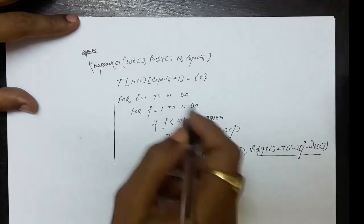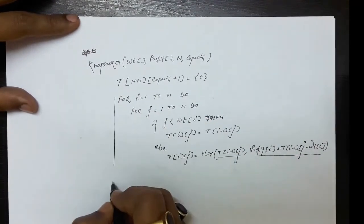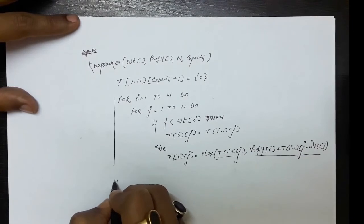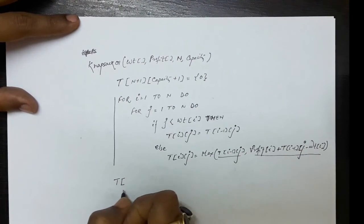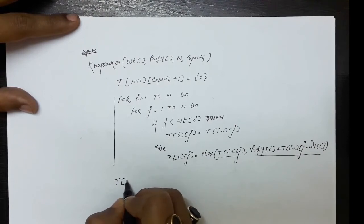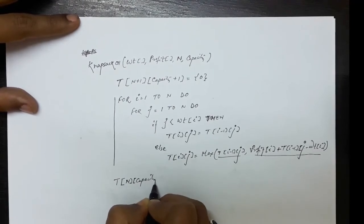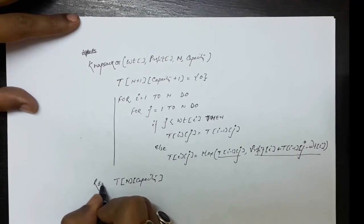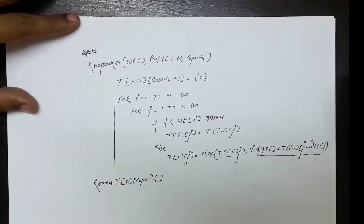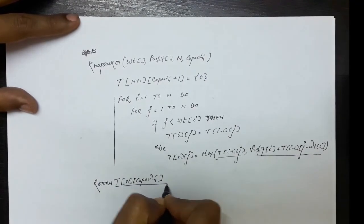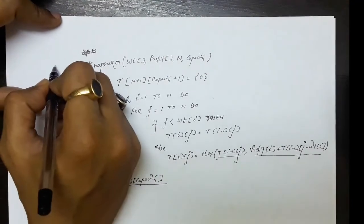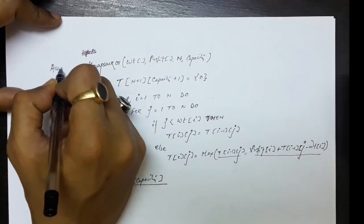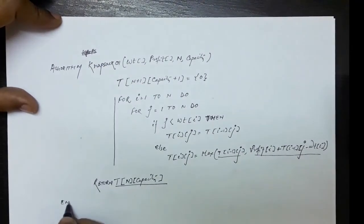Once both loops finish, we have the maximum profit. The answer is stored in the rightmost corner of the memoization table — specifically T[n][capacity]. We return T[n][capacity] as the largest profit that can be earned. This completes the 01 knapsack problem solution using dynamic programming.